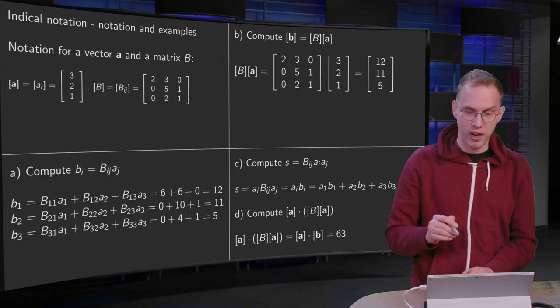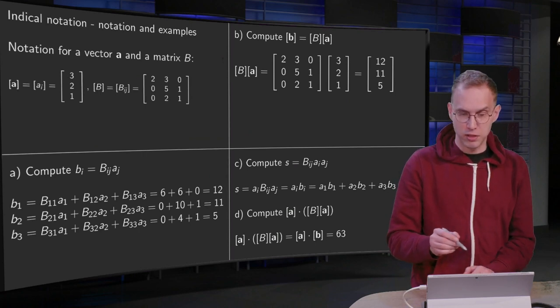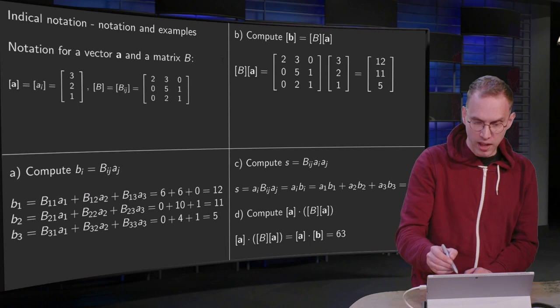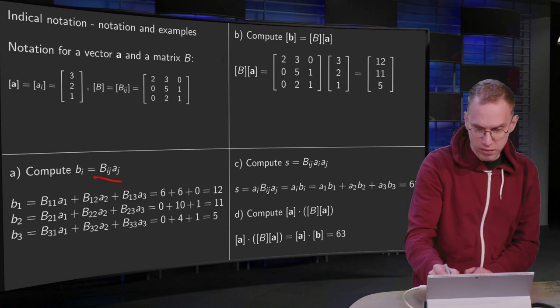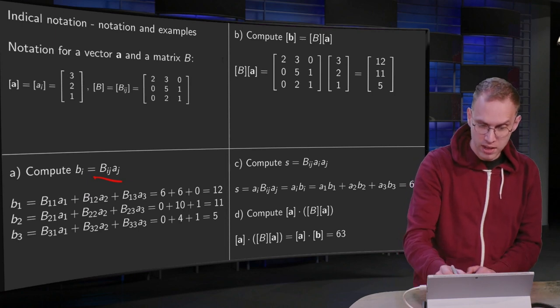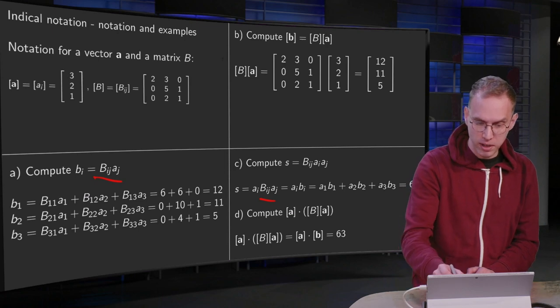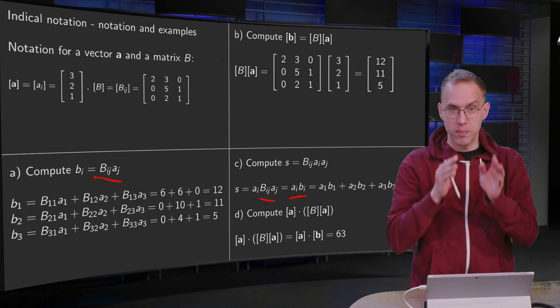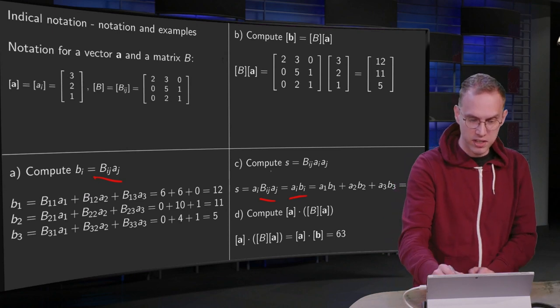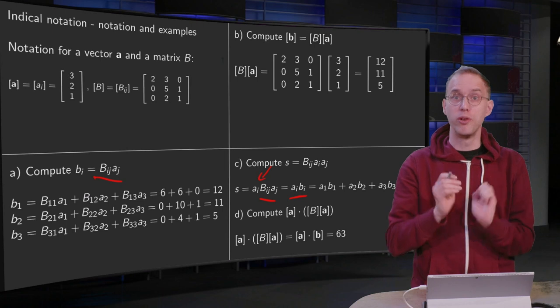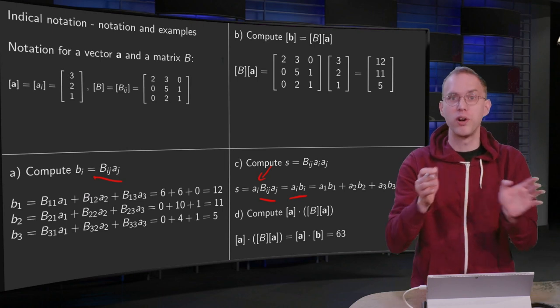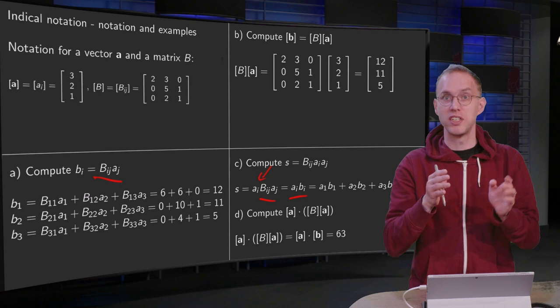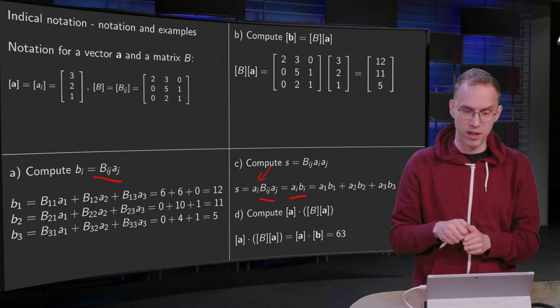Let's do one more example. So compute s equals bij ai aj. So now we have to sum over two indices. Fortunately, we have already computed the bij aj over here. That yields bi. So this bij aj can be replaced by bi. And notice that we can just fiddle around with these numbers. The bij ai aj is the same here as ai bij aj, because they are all numbers. Using indicial notation, we don't have to worry about the order. The order is just taken care of by the indices themselves. Like if you do matrix times matrix, you have to be careful with the order. Here, no problem. So you can just interchange all of that.